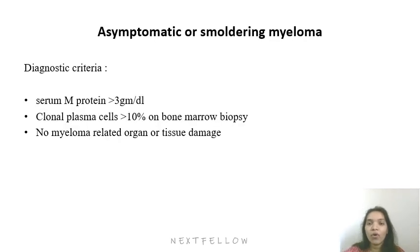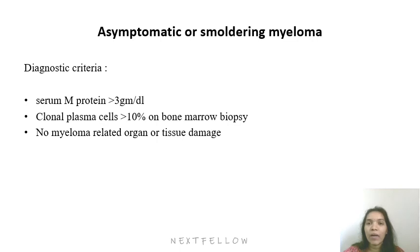Asymptomatic or smoldering myeloma sits between multiple myeloma and MGUS, and these patients may develop multiple myeloma in the future. The diagnostic criteria include serum M protein more than 3 grams and clonal plasma cells more than 10% on bone marrow biopsy, but with no tissue damage, no target organ damage, and no CRAB features — meaning no hypercalcemia, no anemia, no renal insufficiency, and no bone lesions.